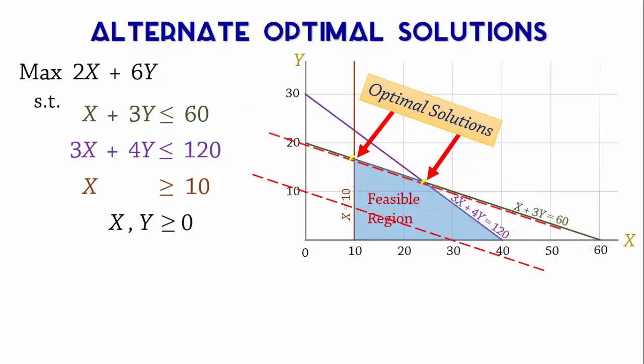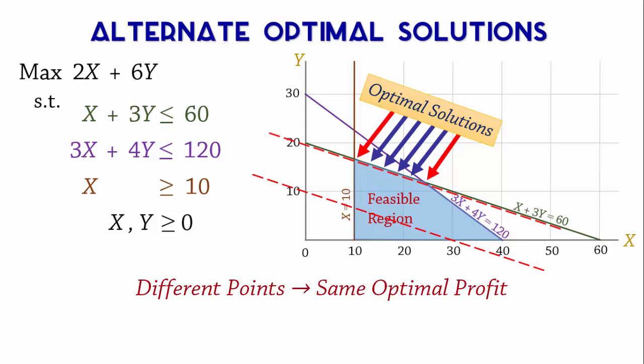In fact, not only these two points are optimal solutions. Every single point between them on the line is also optimal. There is nothing wrong with alternative optimal solutions. They offer the benefit of different combinations of the decision variables that produce the same optimal profit or cost.